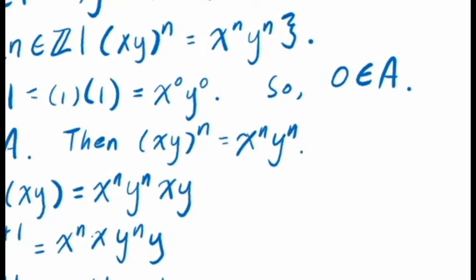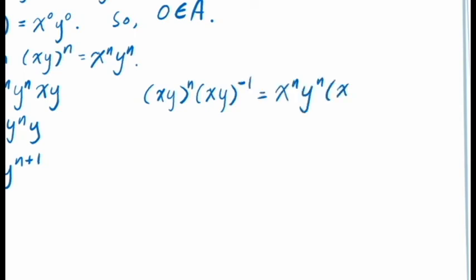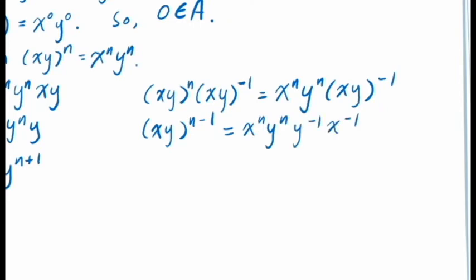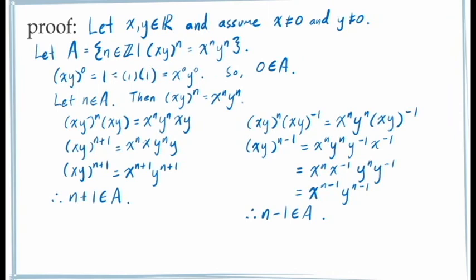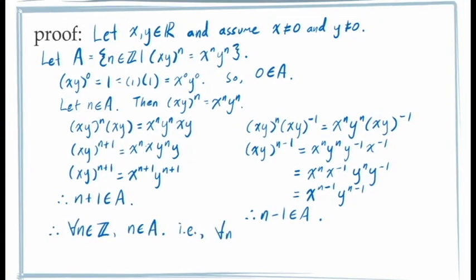Similarly, starting with our assumed equation xy to the exponent n equals x to the exponent n times y to the exponent n and multiplying both sides by the inverse of xy, the left-hand side becomes the definition of xy to the exponent n minus 1. On the right-hand side, using the fact that the inverse of xy equals y inverse times x inverse, we shuffle the multiplication to get x to the exponent n times x inverse times y to the exponent n times y inverse, giving us x to the exponent n minus 1 times y to the exponent n minus 1. This proves that n minus 1 also belongs to the set A. Since for any n in A we have both n plus 1 and n minus 1 in A, the principle of mathematical induction tells us that all integer values of n belong to the set A — which is exactly what we needed to prove.